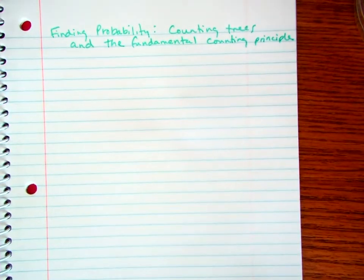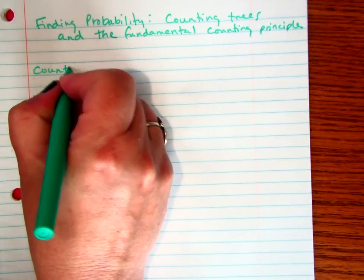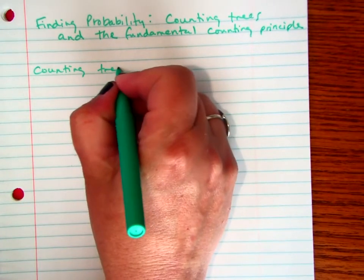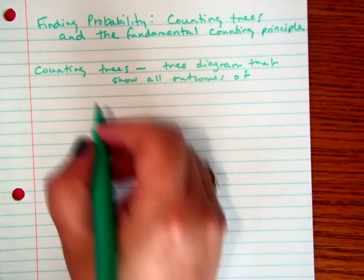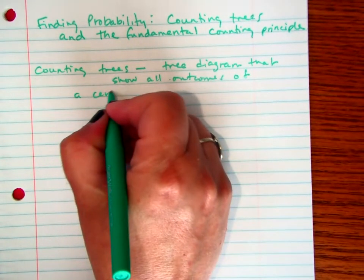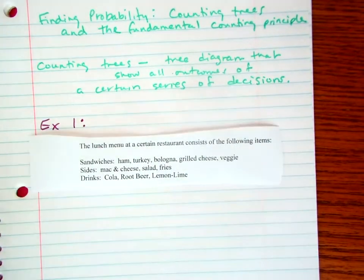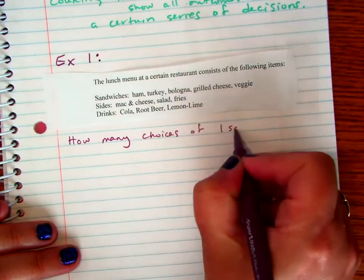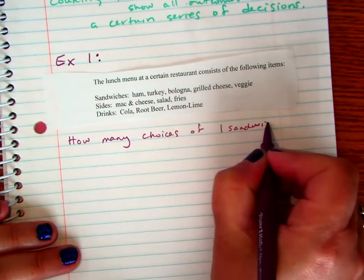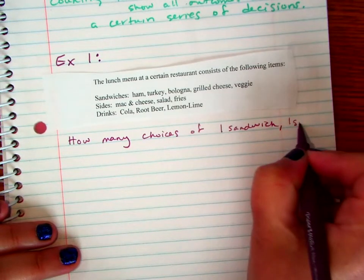First of all, counting trees are basically like a tree diagram that show all the outcomes of a certain series of decisions. That's one way to think about them. So let me give you an example of this.